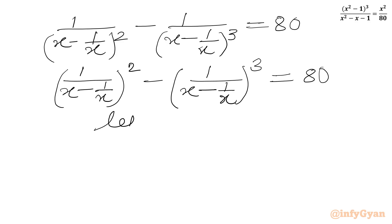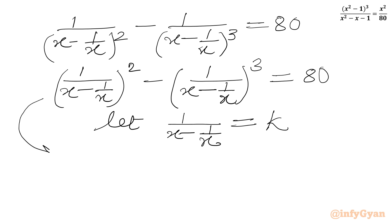Now we can assume 1 over x minus 1 over x equal to k. So I can write our equation as k squared minus k cubed equal to 8.